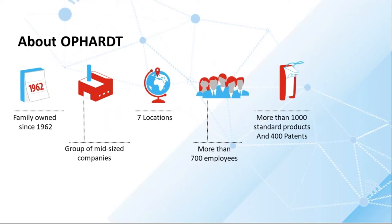So who is Opart Hygiene? It was founded in 1962 by a gentleman named Hermann Opart, a young German engineer at the time. He was working out of his garage where he invented a dispenser that turned into the number one dispenser in German, Swiss, and Austrian healthcare facilities, and it stayed that way for the last 50 years or so.